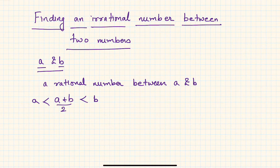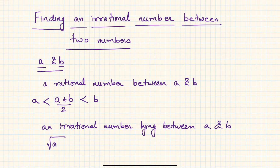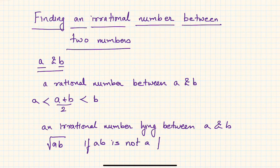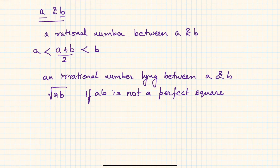Similarly, an irrational number lying between a and b is given by √(ab), if ab is not a perfect square. So if ab is not a perfect square, then √(ab) is an irrational number lying between a and b.